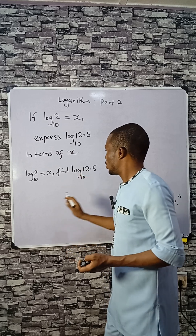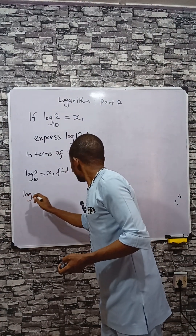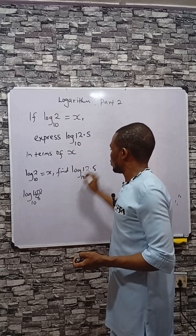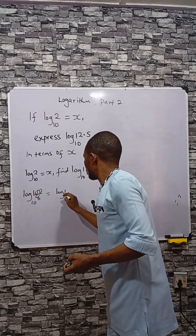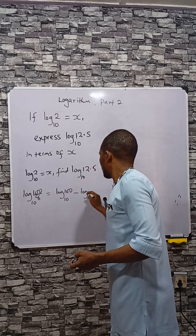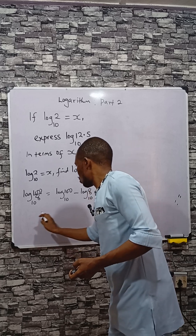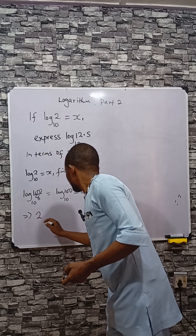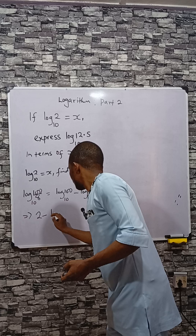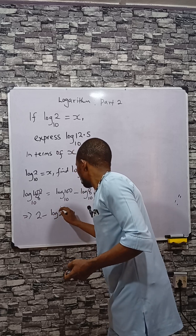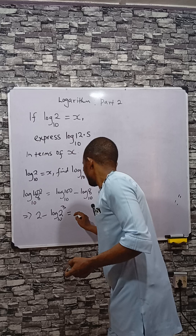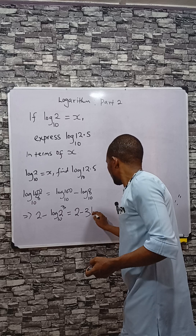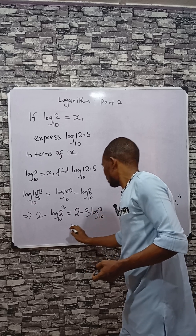Now, log(100 ÷ 8) base 10 will give you 12.5. That would be log 100 base 10 minus log 8 base 10. Log 100 base 10 is 2, and log 8 can be expressed as log(2³) base 10. So you can write this as 2 minus 3·log 2 base 10.